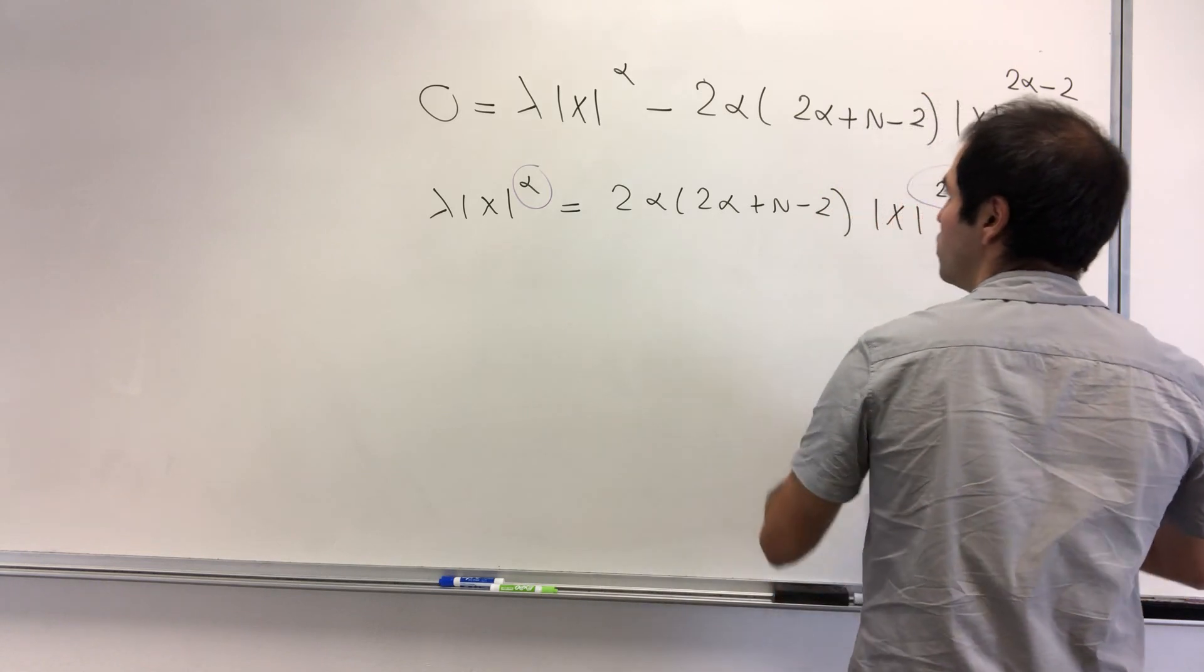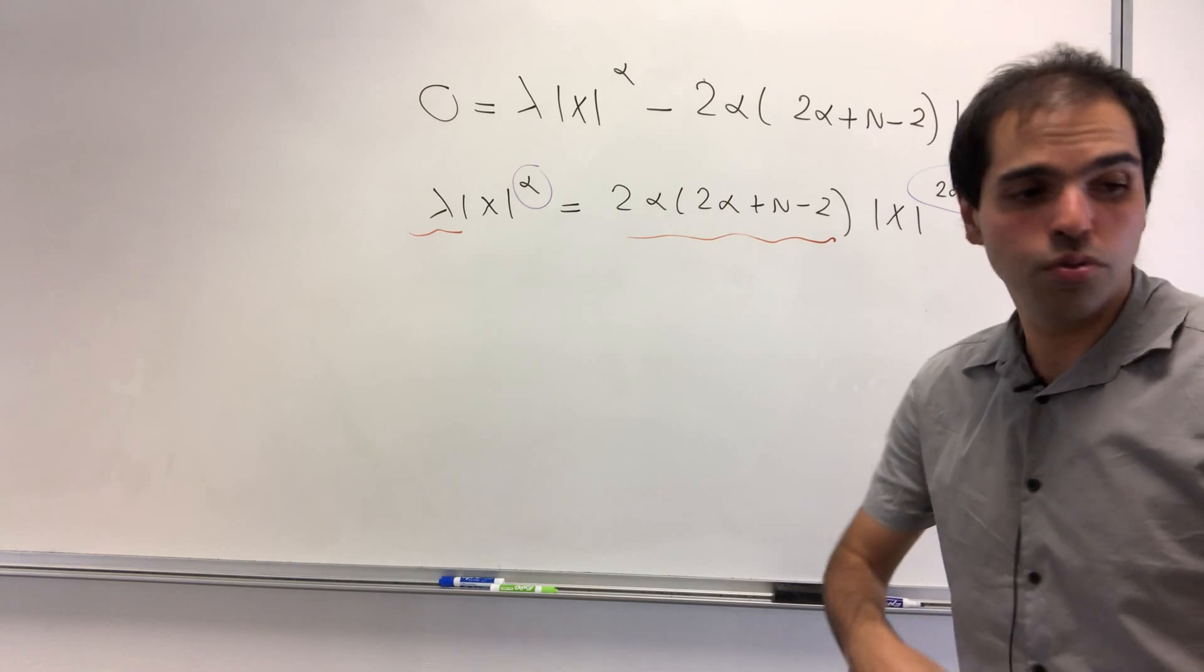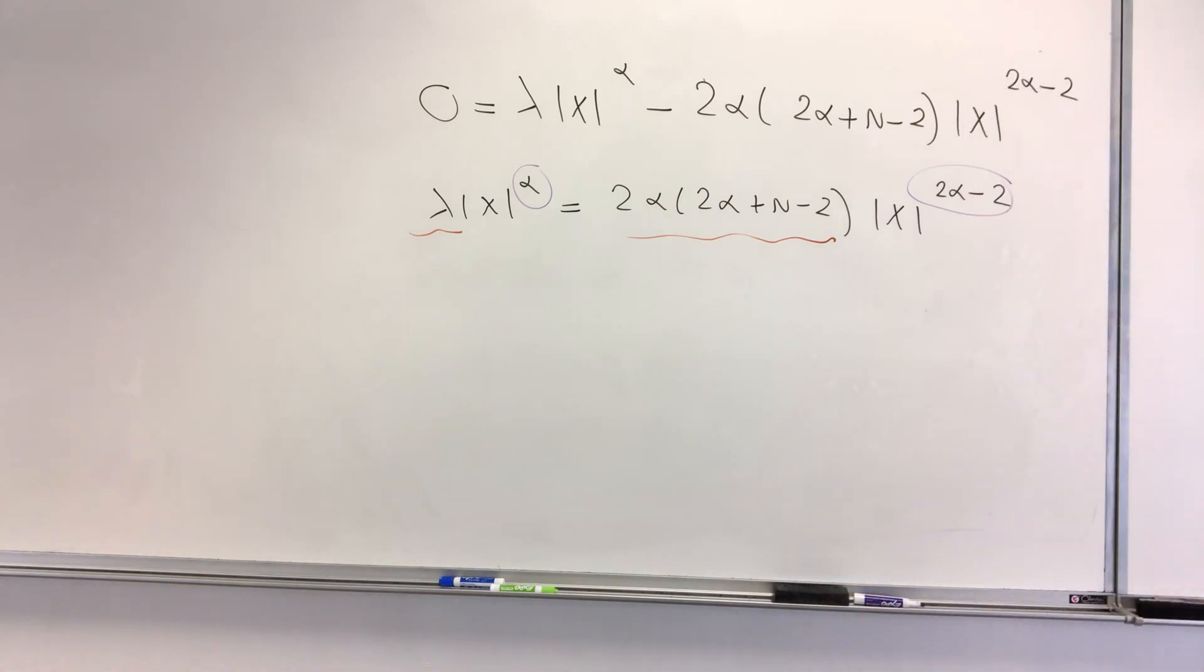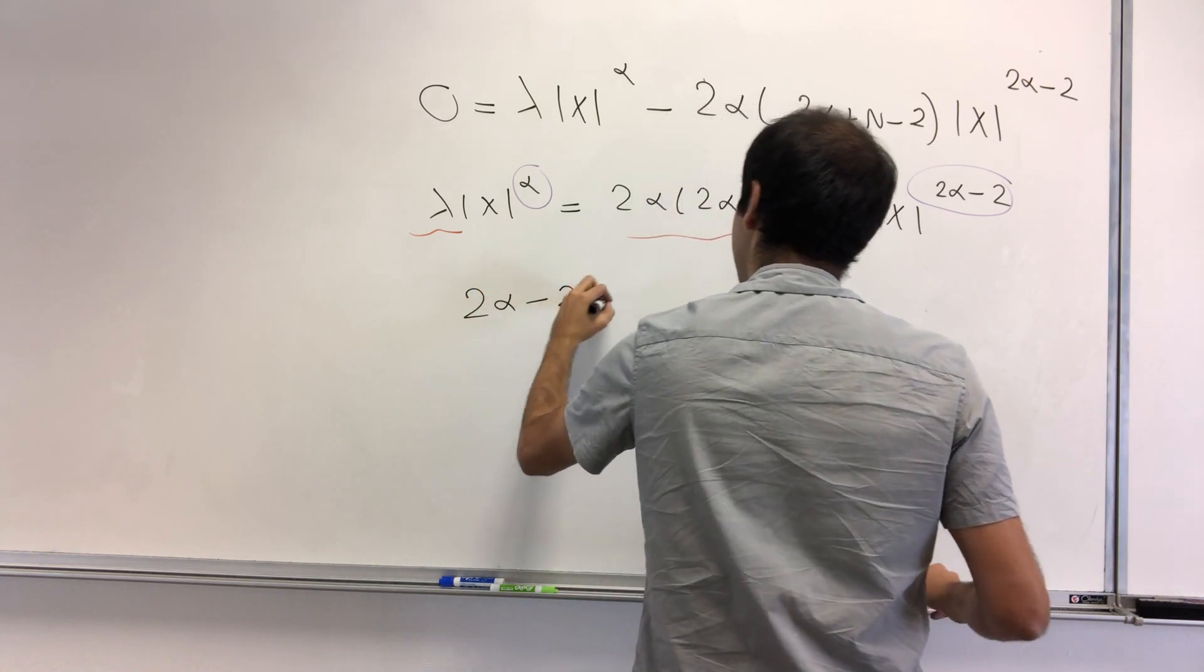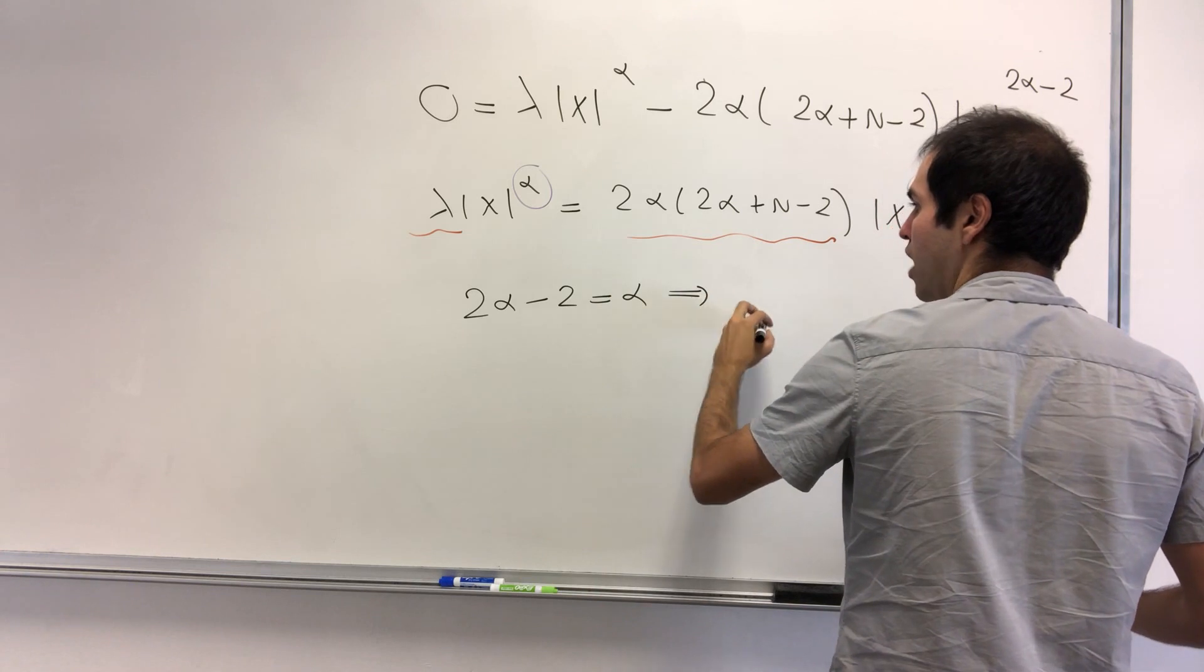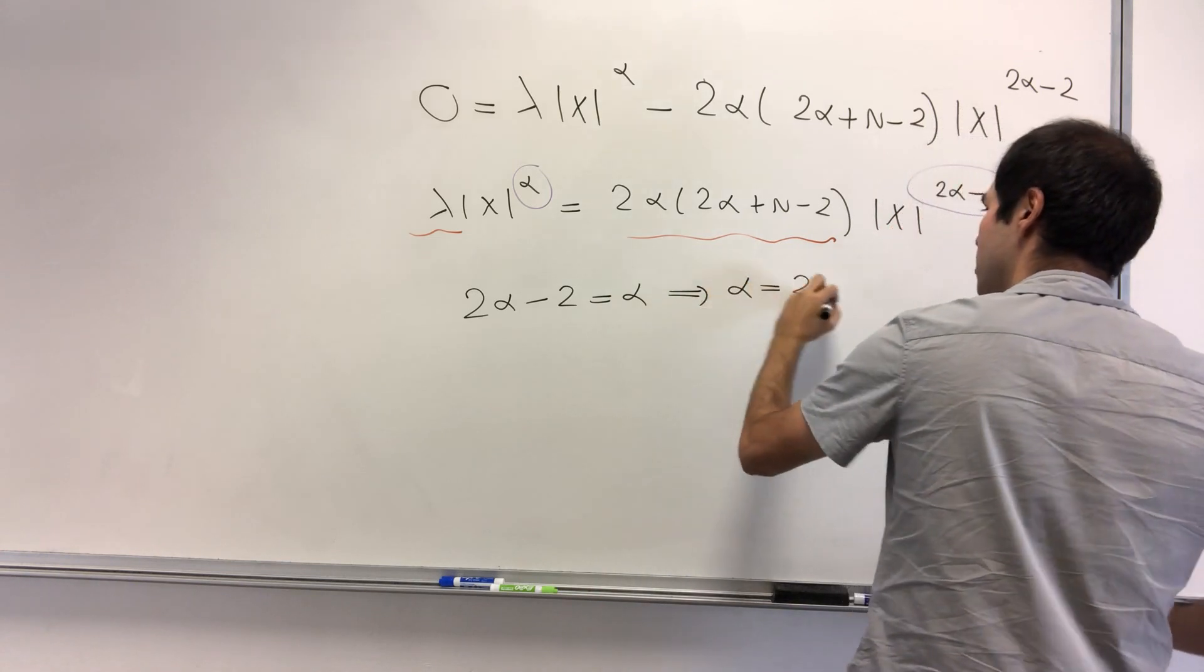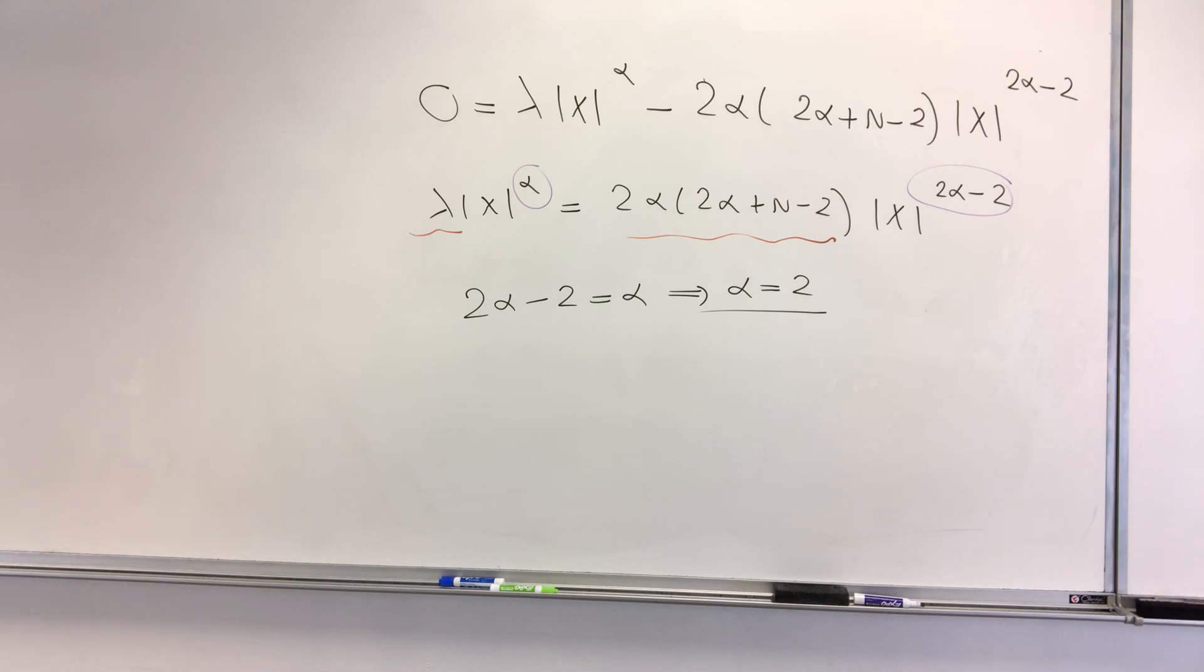And well, the only way two power functions are equal are if the powers are equal and the coefficients are equal. And it turns out this will help us first to solve for alpha and then to solve for lambda. Because what do we get? 2 alpha minus 2 equals alpha and I believe that just gives you alpha equals 2. So it turns out square functions here, they work. And so again w is x squared.